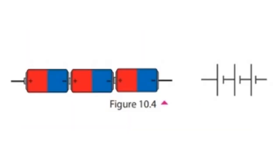When the required voltage for an electric equipment cannot be supplied by a single cell, several cells are connected to supply the voltage. In this connection, the negative terminal of one cell is connected to the positive terminal of the next one. The negative terminal of the second cell is connected to the positive terminal of the third one, and so on.